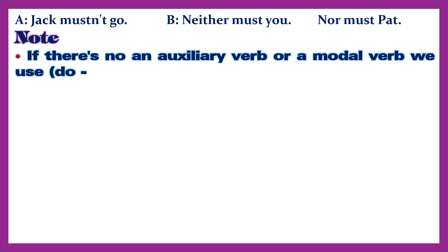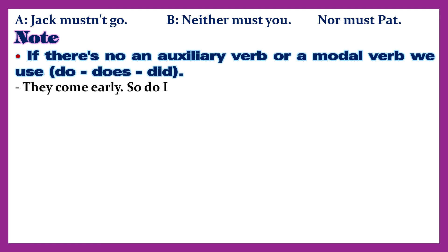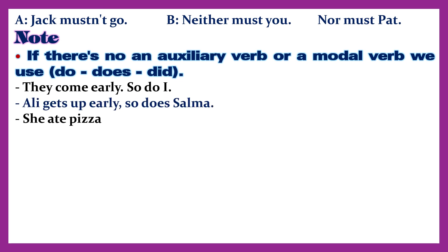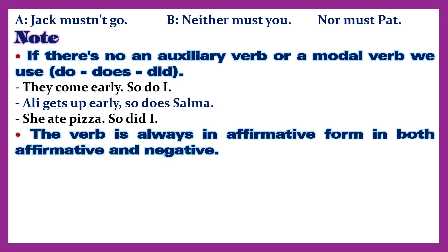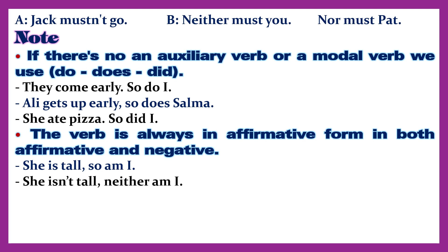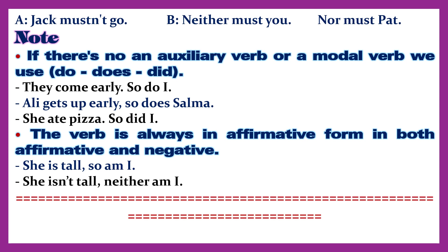Note: If there is no auxiliary verb or modal verb, use do, does, or did. Examples: They come early — So do I. Ali gets up early — so does Salma. She ate pizza — So did I. The verb is always in affirmative form in both affirmative and negative constructions. She is tall — so am I. She isn't tall — neither am I.